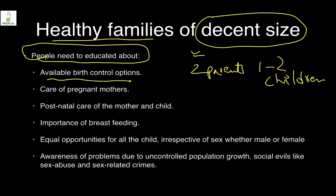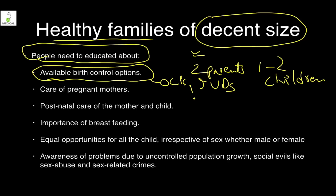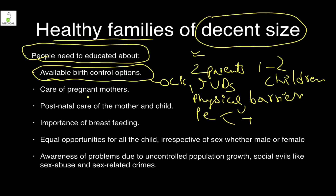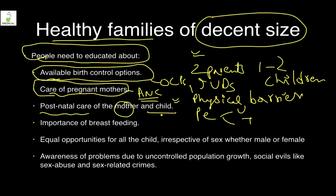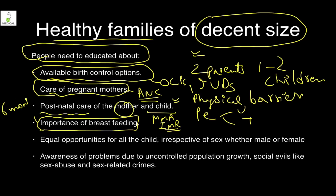Birth control options include oral contraceptive pills, intrauterine devices, physical barriers like condoms, natural methods, and permanent methods like vasectomy and tubectomy. Care of the pregnant mother — antenatal care — is extremely important, as is postnatal care of the mother and child to decrease MMR and IMR. Breastfeeding is so important that for the first six months, babies don't even need water — this is called exclusive breastfeeding.